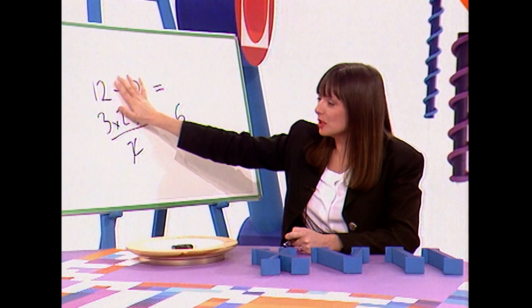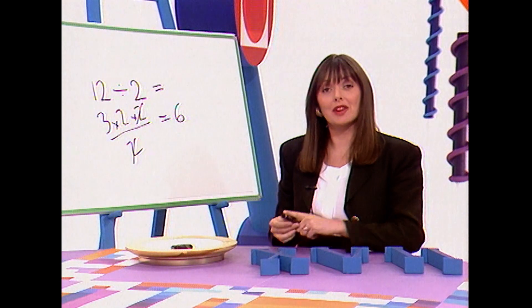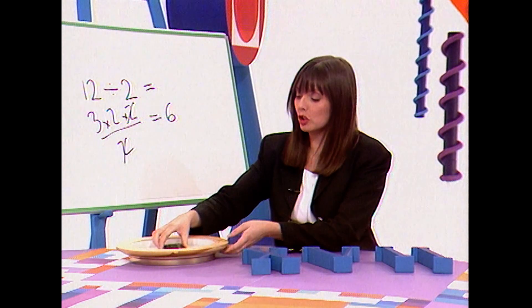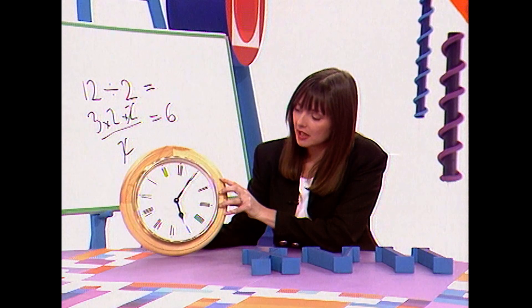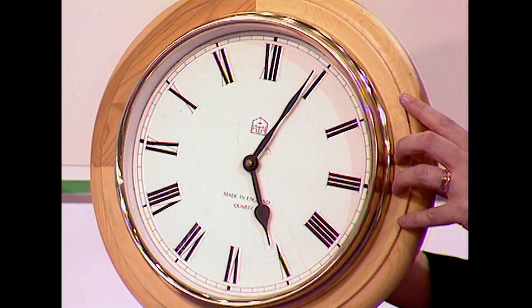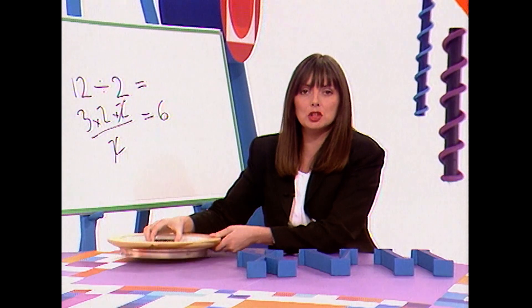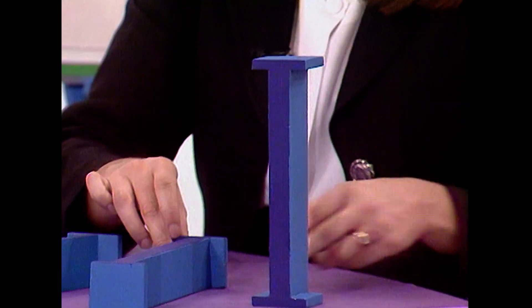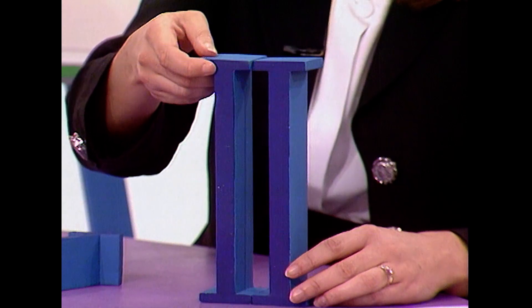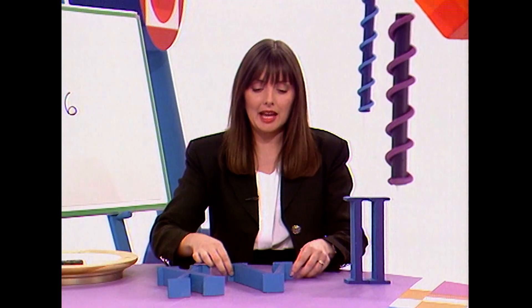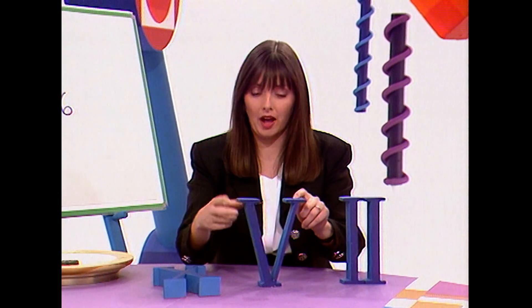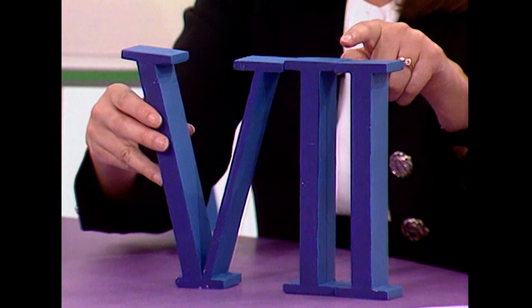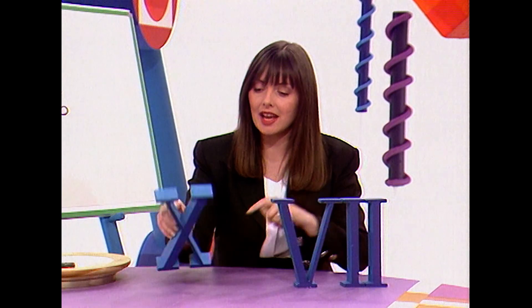How do Roman numerals work? One stroke stands for 1; two strokes stand for 2. A V stands for 5. If you put the V there, you have 5, 6, 7 — V, I, I. Then the X stands for 10. But how do Roman numerals get you out of a fix? Well, these were terribly difficult to multiply and divide with.